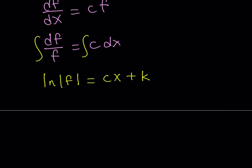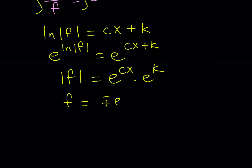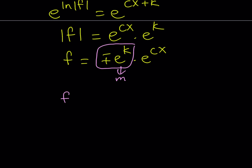We got rid of all the derivatives — now we're almost there. To isolate f, I'll take e to the power of both sides. That gives the absolute value of f equals e to the power cx multiplied by e to the power k. I can write this with a plus-minus sign, so f equals plus-minus e to the power k — which is a constant — multiplied by e to the power cx. Since e to the power k is a constant, I'll call that m. So f of x equals m times e to the power cx.